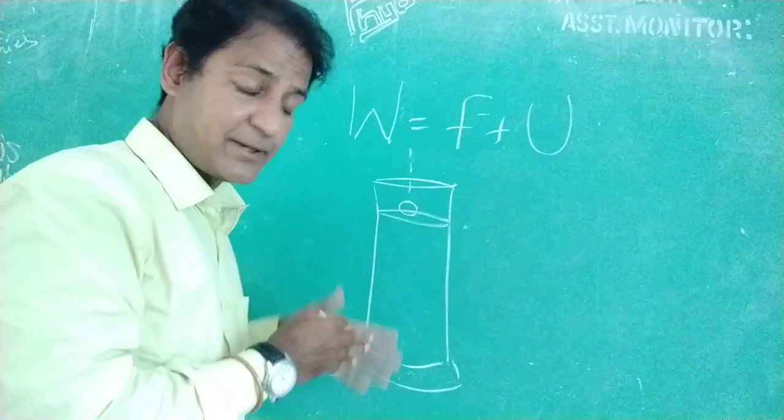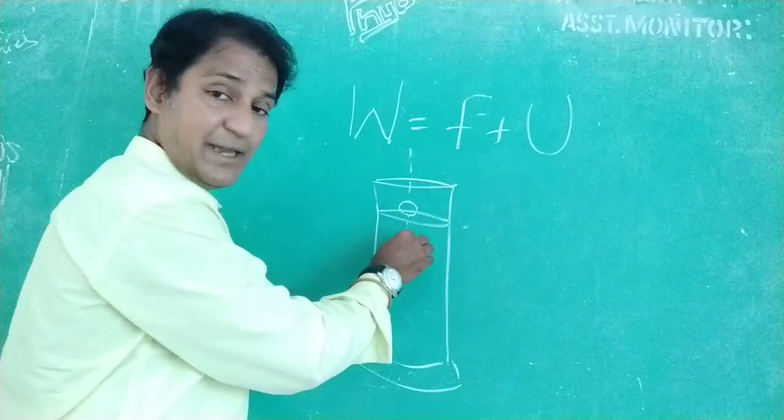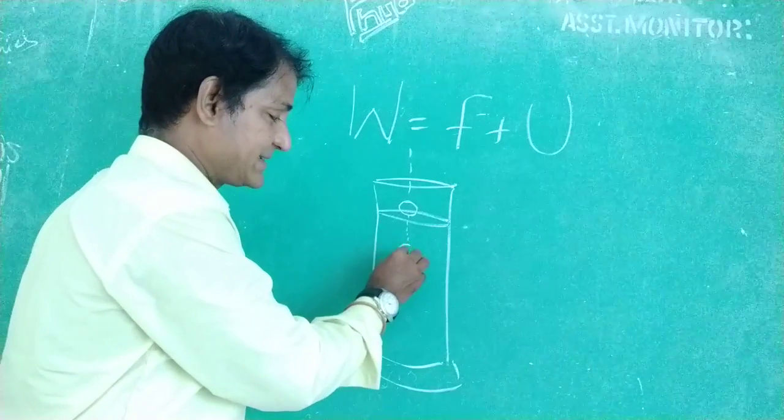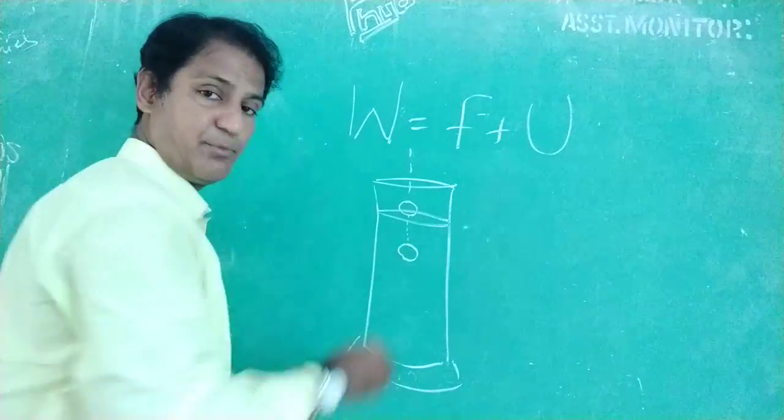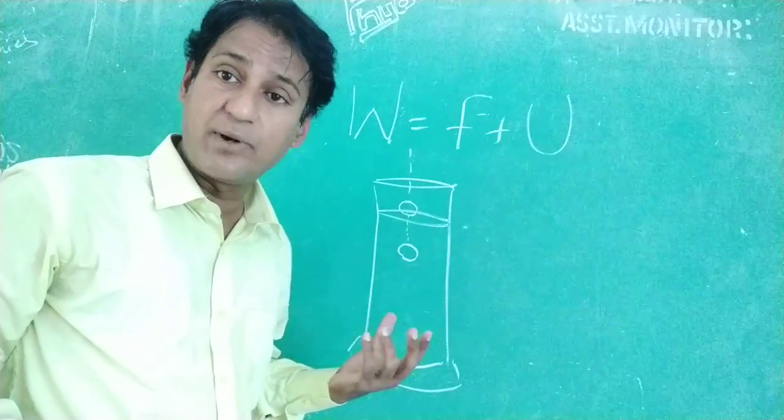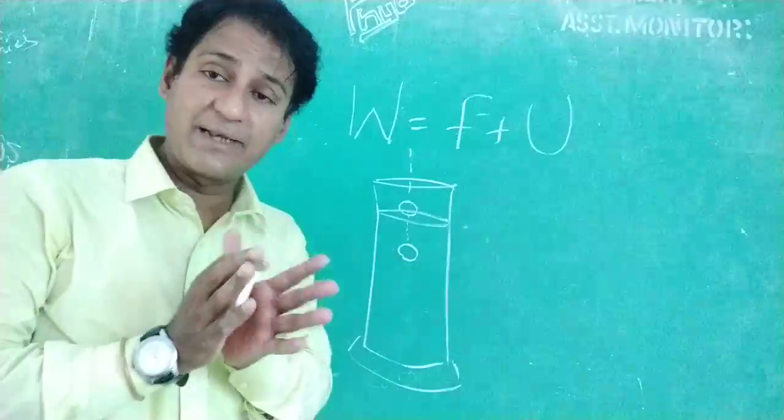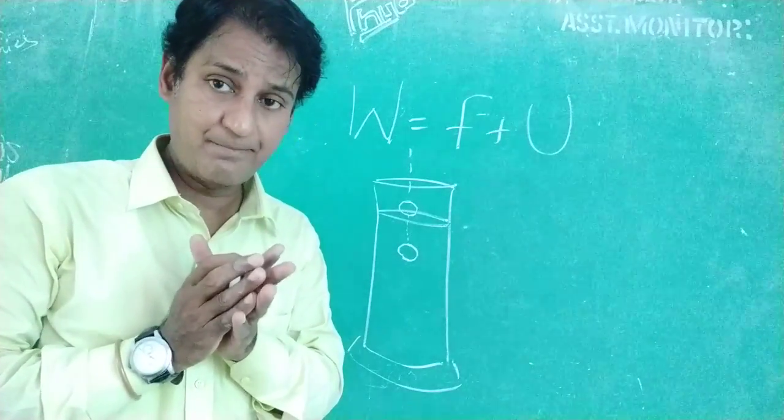If you keenly observe it, you can see, after some interval of time, this spherical metal ball will keep on moving inside this highly viscous liquid with a constant velocity. That constant velocity is called as the terminal velocity.